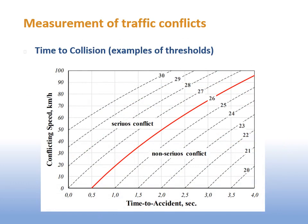Based on the time to collision and the conflicting speed, we can define the severity level of the conflict using this diagram. The horizontal axis represents time to accident in seconds, while the vertical axis is the conflicting speed in km per hour. Conflicts with a severity level above 26 are ranked as serious conflicts.